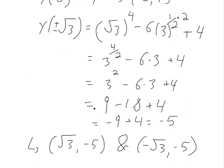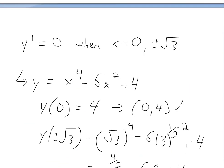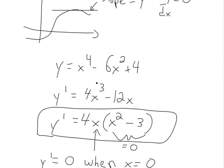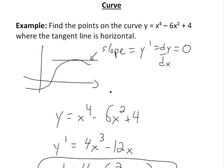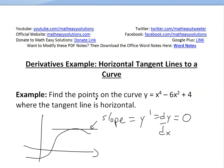So there are three points where the derivative is 0 and the tangent line is horizontal. That's all for today — you can download these notes via the Dropbox link below. Hopefully you enjoyed this, and stay tuned for another Math Easy Solution.